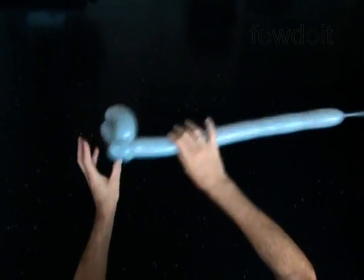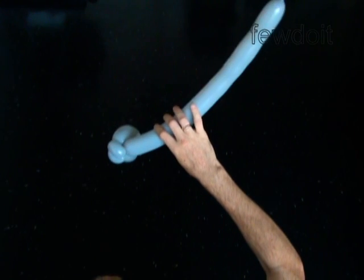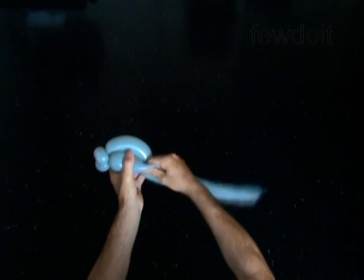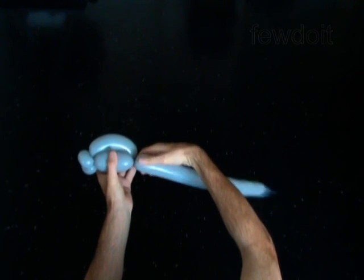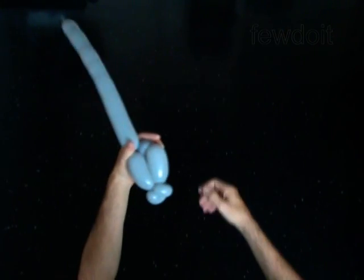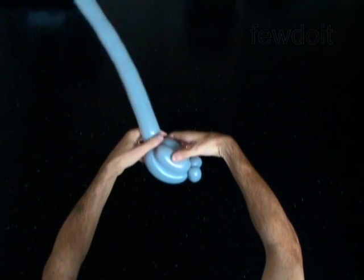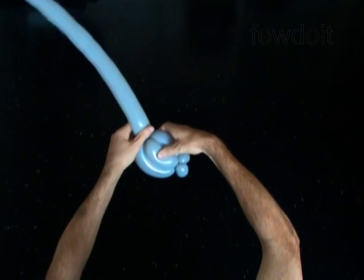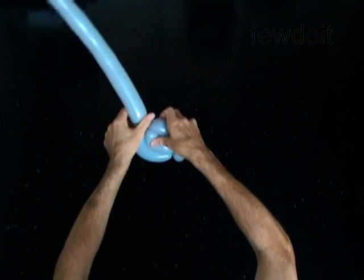Twist the fifth three inch bubble. Lock the free end of the fifth bubble between the third and the fourth bubbles. Remember you have to roll the third and fourth bubble around the fifth bubble.